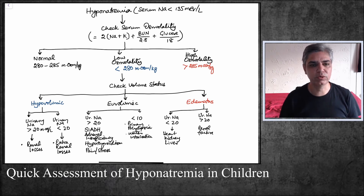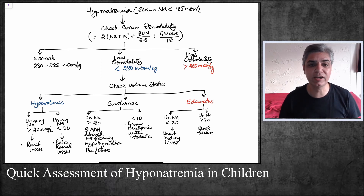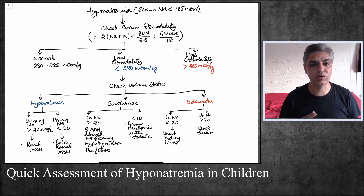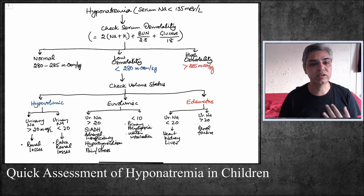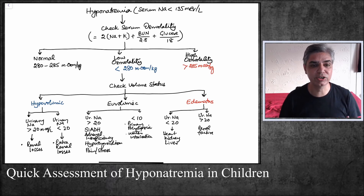The volume status of the child will be either hypovolemic — meaning the child has mild or moderate dehydration — or the child may be edematous, which we call a hypervolemic state with peripheral edema, or the child may be neither edematous nor dehydrated, which is the euvolemic state. If you have a hypovolemic, dehydrated child with hyponatremia and low serum osmolality, the fourth step is to look at urinary sodium excretion.